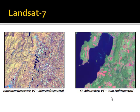Some examples of Landsat imagery in Vermont are shown here. The St. Albans Bay example is particularly interesting — you can see little wispy patches of green, which are actually algal blooms.